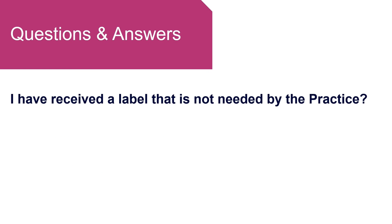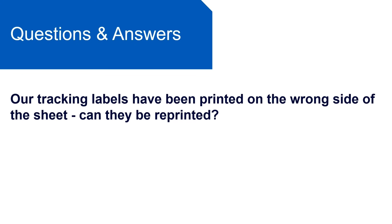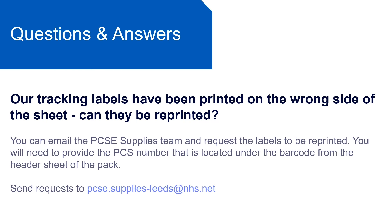I have received a label that's not needed by the practice. If you have received a label that you do not need, you can securely destroy this label. Our tracking labels have been printed on the wrong side of the sheet — can they be reprinted? You can email the PCSE supplies team and request the labels to be reprinted. You will need to provide the PCS number that is located under the barcode from the header sheet of the pack. Please send requests to pcse.supplies-leads@nhs.net.